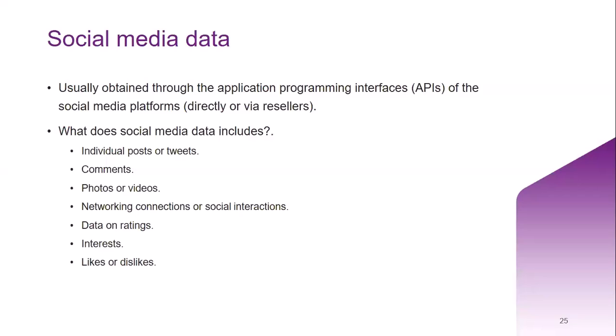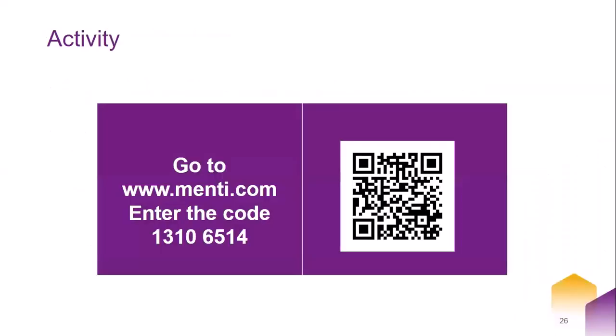The Twitter streaming API allows researchers and collecting institutions to obtain tweets in real time, providing the most authentic record of social media information. Social media data available on these platforms includes individual posts or tweets, comments, opinions, behavior, likes, dislikes, visual content such as photos and videos, interests, social interactions, networks, and current trends. These different platforms create a byproduct of valuable data about the users who interact with them.